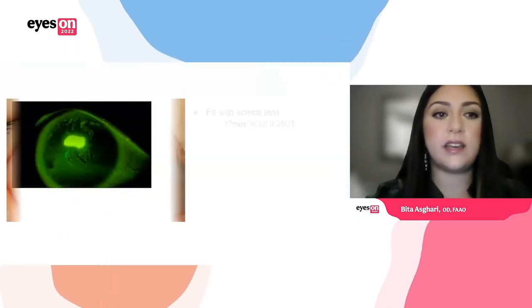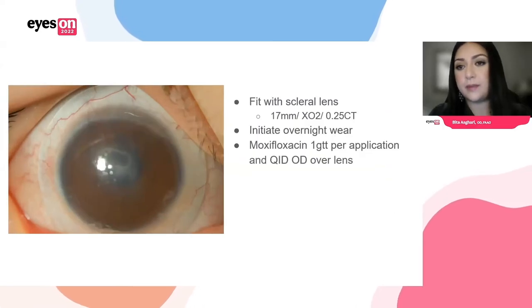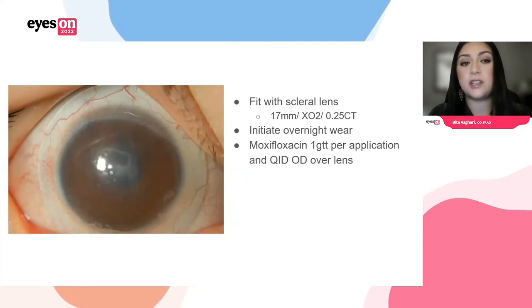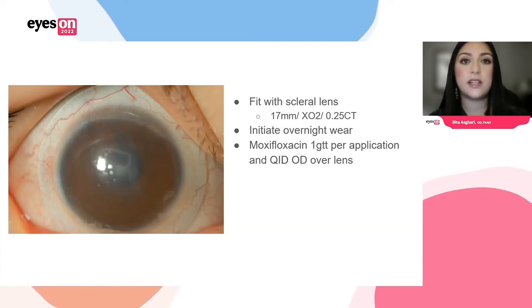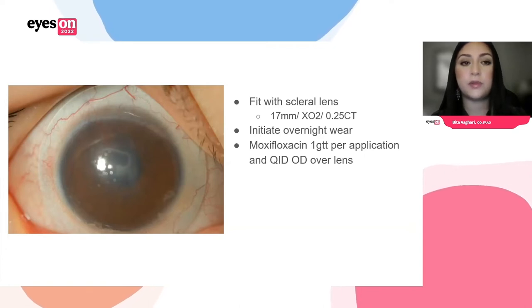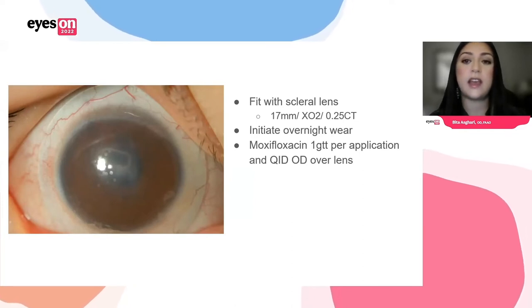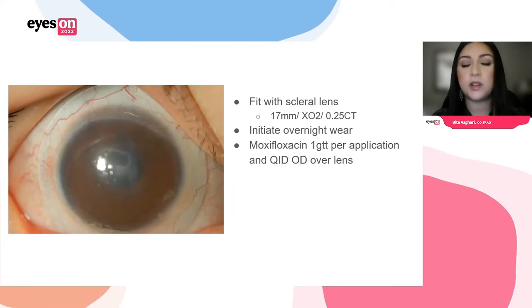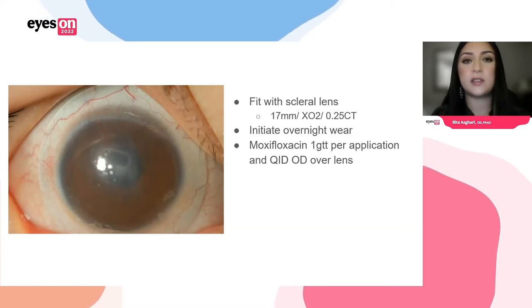We ended up fitting her with a lens — I went with a 17 millimeter, hyperperm DK material, and minimized thickness as best I could. For her, we actually initiated overnight wear, which can be indicated for the treatment of persistent epithelial defects in scleral lens wear. This needs to be done very carefully and monitored very closely with appropriate co-management and prophylactic medication. Especially given that she was eight years old and the chronicity of the defect, we took utmost caution — applying moxifloxacin one drop per lens application in the lens reservoir and four times a day over the lens as well as a prophylactic measure. We monitored her very closely — in fact, we watched her every day.